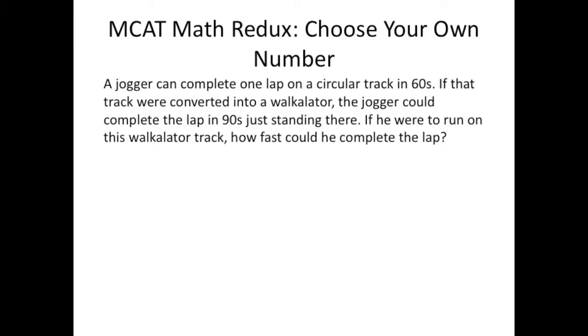Now on to the last bit. Choose your own number, not adventure. Now, this is something I recommend when the algebraic method of solving the problem just isn't coming to you right away. So, the question is, a jogger can complete one lap on a circular track in 60 seconds. If that track were converted into a walk-a-later, those walking platforms they have at airports, the jogger could complete the lap in 90 seconds just standing there. If you were to run on this walk-a-later track, how fast could he complete the lap? An easy way to do this would be knowing the distance of the track, but it's not given. This is similar to kinematics questions, where final velocity of a ball thrown in the air isn't given, but you have to realize that it's zero at its peak. So, since the distance isn't given, we can choose our own. And it can be anything you want. But keep it simple. My first instinct is usually 10 if the numbers are small. In this case, my first instinct was 100. But what works best is if the distance is a multiple of both given values. So, I'm going to choose 180 meters.